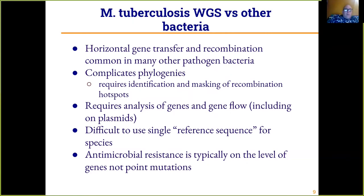Because of the diversity in many bacterial species — for instance E. coli — it is difficult to use a single reference sequence for all of the species, because you can't map all the reads to a single reference when different parts of the species are very different from each other. Antimicrobial resistance in some other pathogenic bacteria is typically on the level of genes, not point mutations like we see in Mycobacterium tuberculosis.